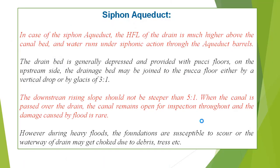In the case of a siphon aqueduct, the high flood level of the drain is much higher above the canal bed, and water runs under siphoning action through the aqueduct barrel. The drain bed is generally depressed and provided with a pucca floor on the upstream side. The drainage bed may be joined to the pucca floor either by a vertical drop or by a glacis of 3:1. The downstream rising slope should not be steeper than 5:1.